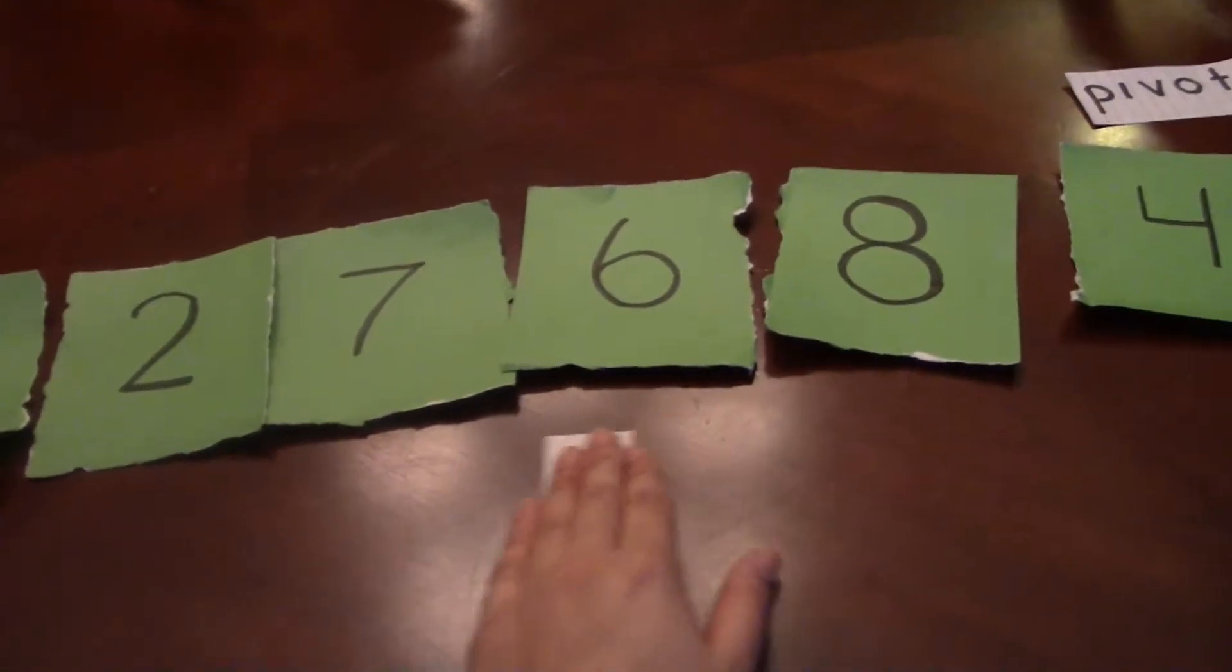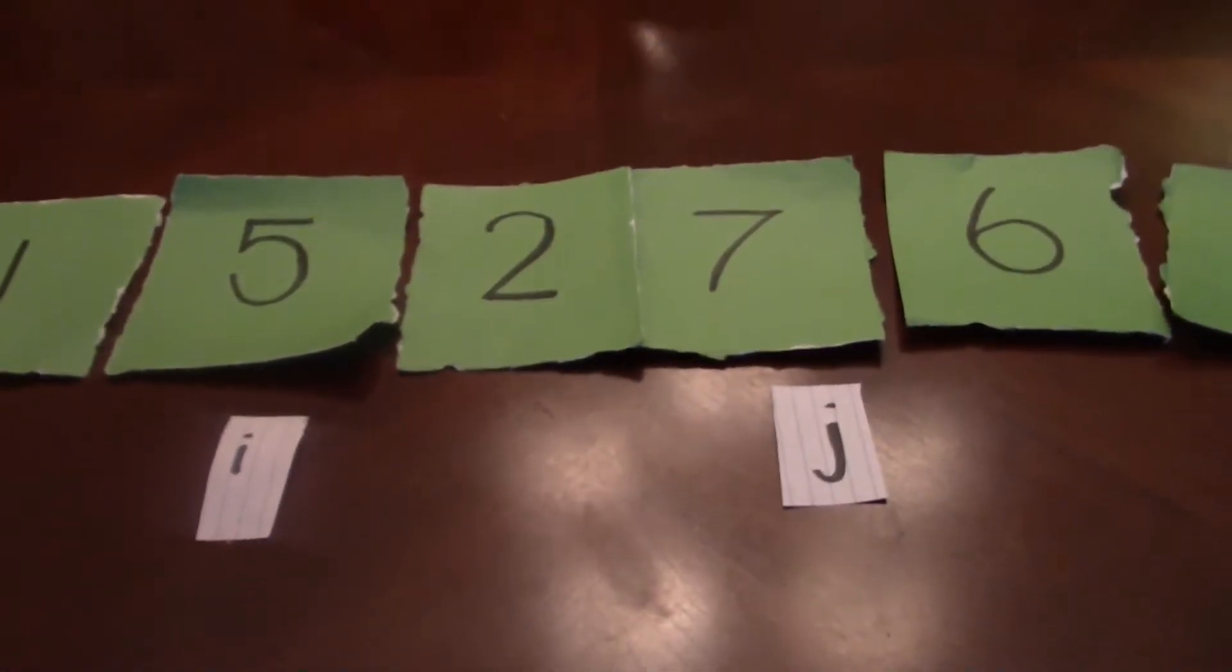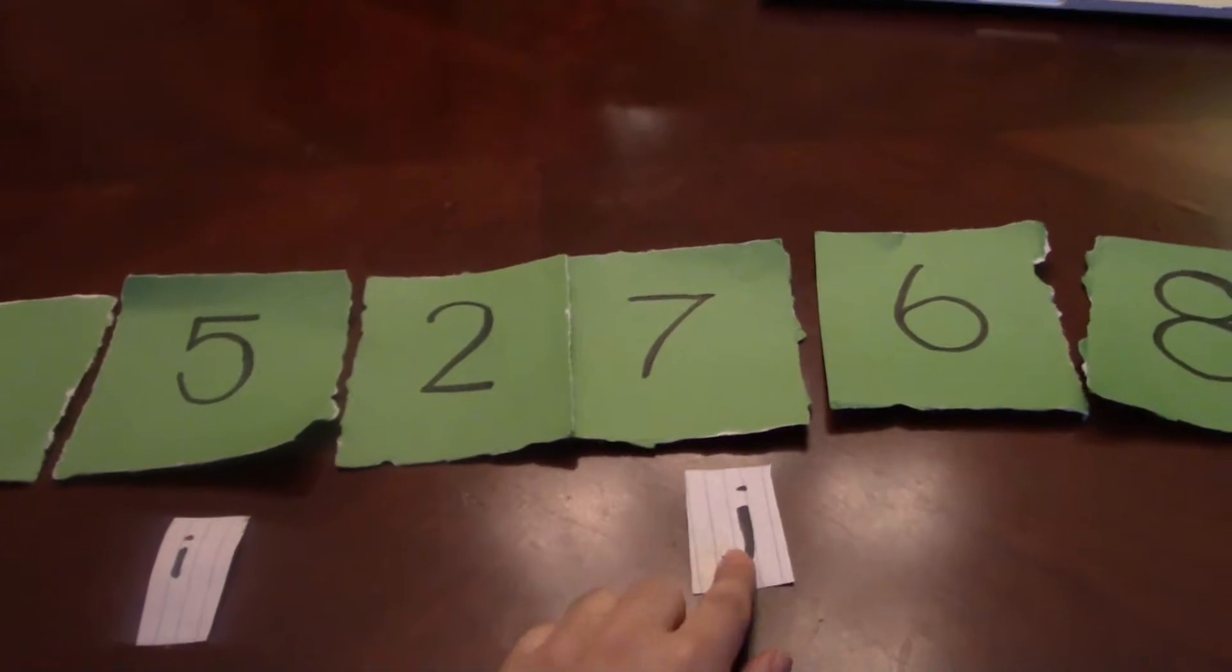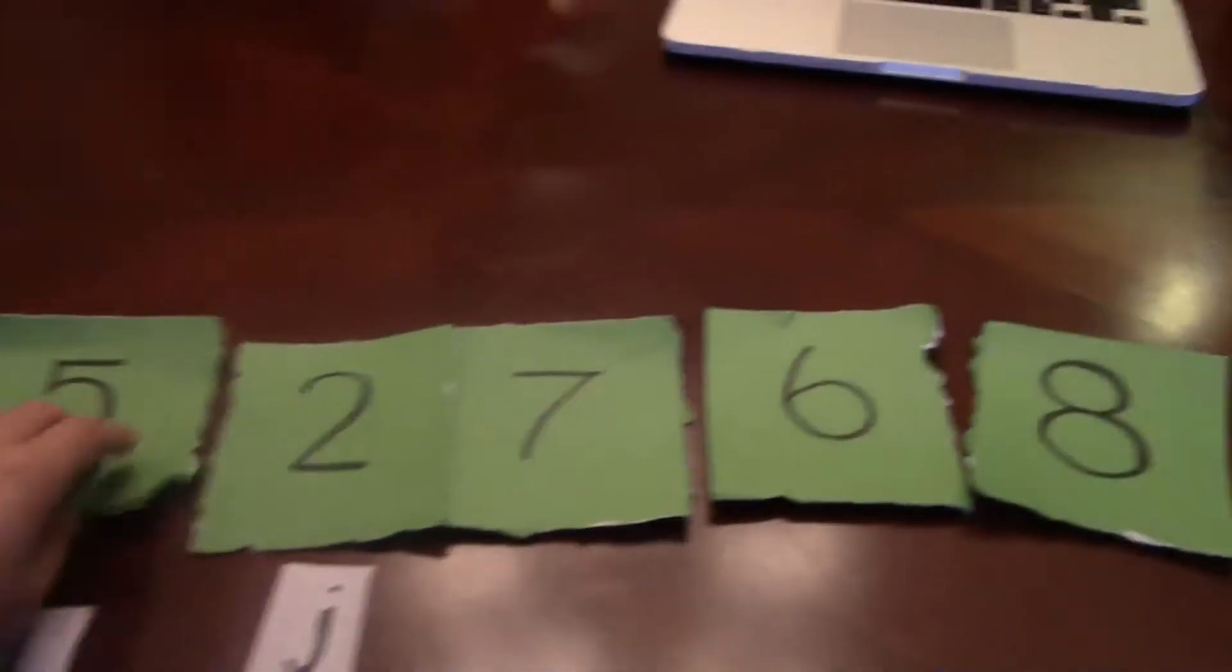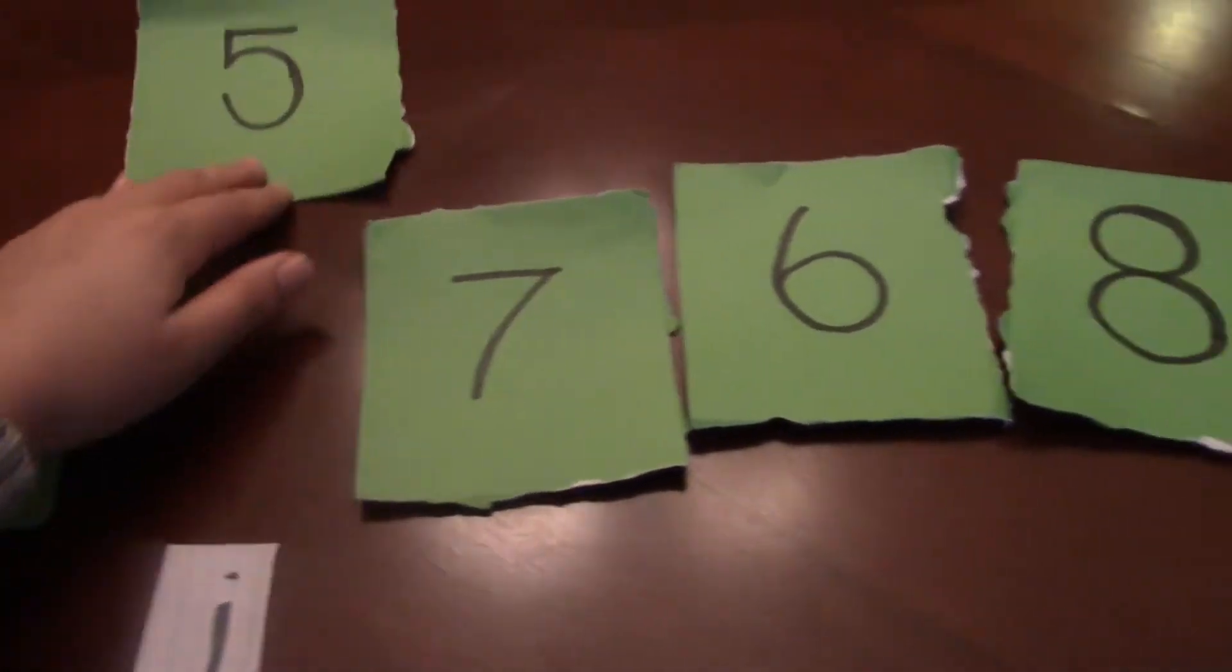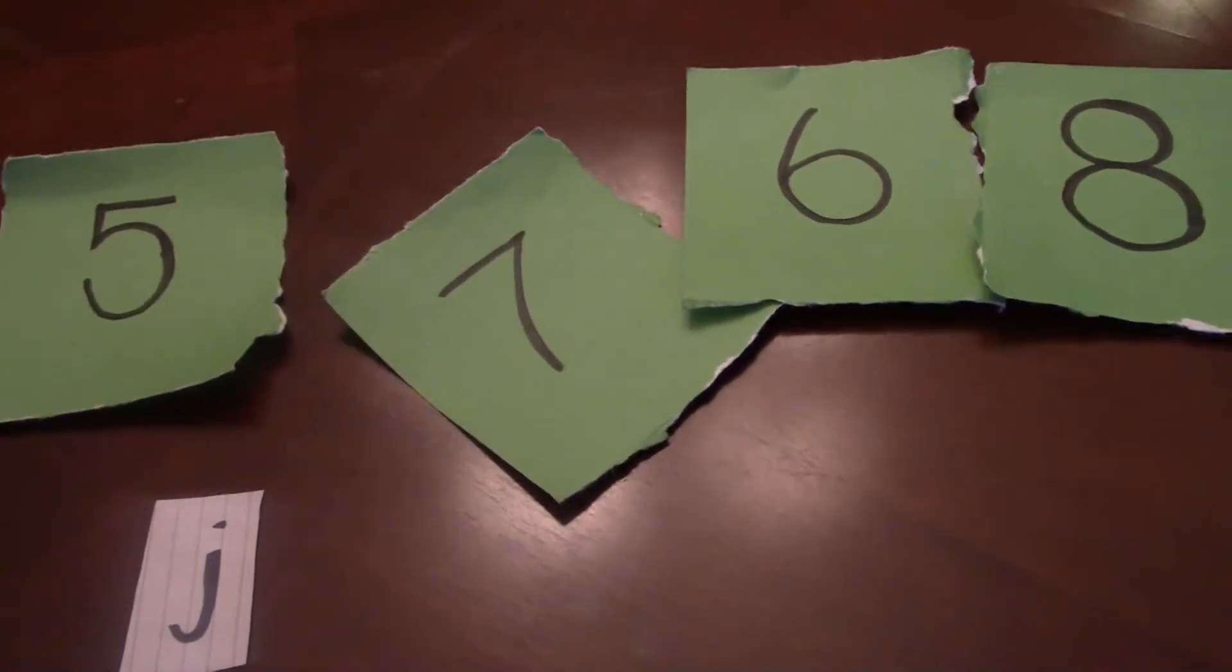For five and seven, so these two numbers are both greater than four, so we're going to move the j down one. And now we have five and two, so we're going to swap these.